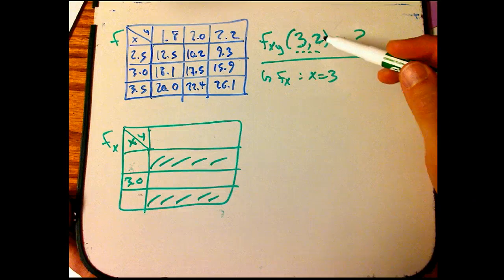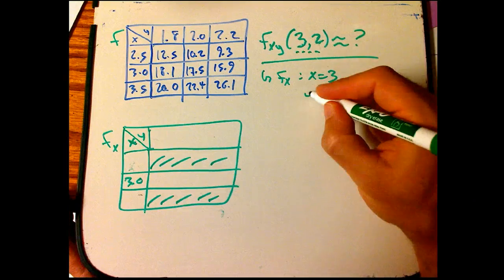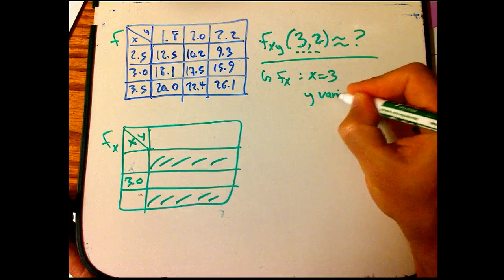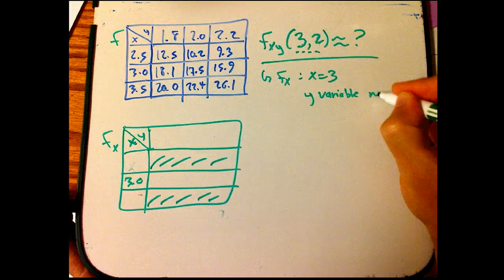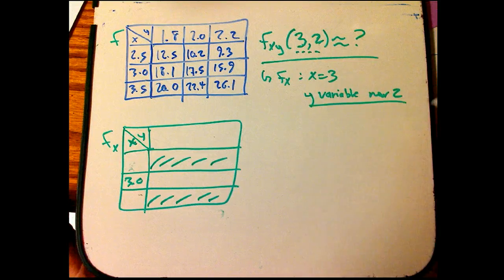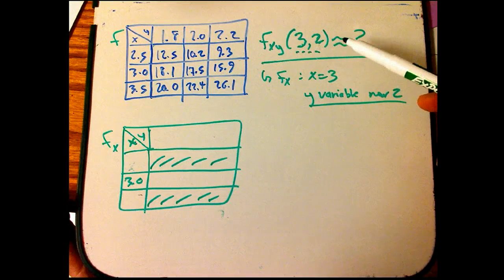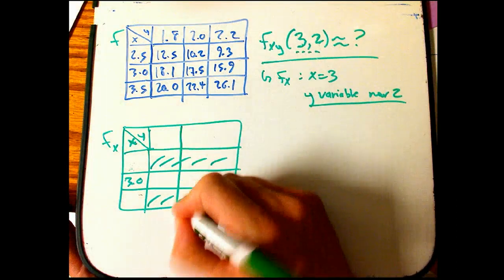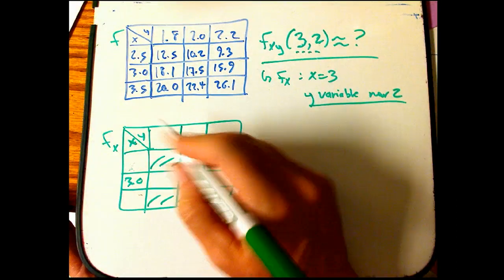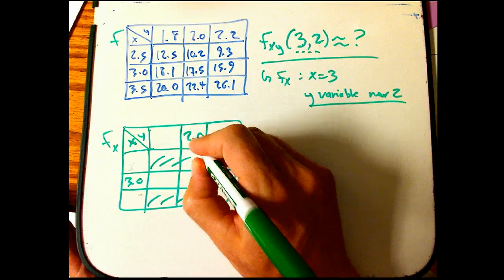And then I'm going to want to vary it around 2, the y variable near 2, and do a difference quotient. Now, the thing about tabular derivatives is that even though I want to get the derivative of this new function, which I'm going to get pretty soon, at 2,